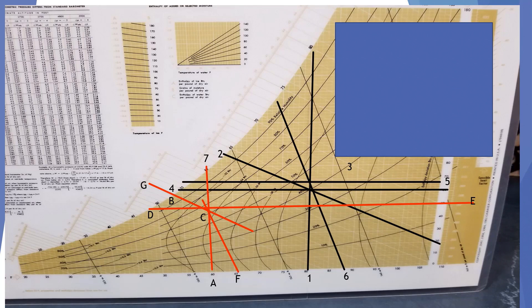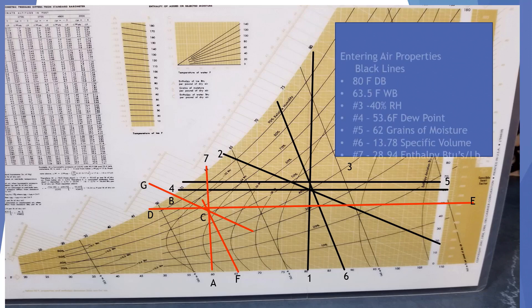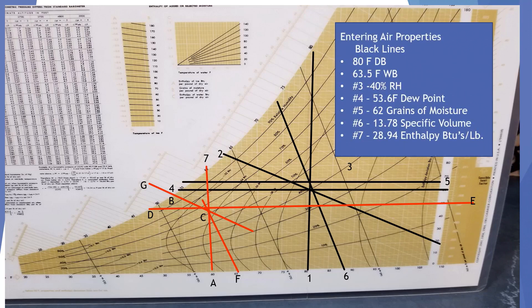By plotting various points on the psych chart, we can tell the property of entering and leaving air. In this plot, we are looking at the entering air properties, which are the black lines. We have 80 degrees, which is our dry bulb temperature. We have a 63.5 wet bulb temperature. At number 3, we have 40% relative humidity.